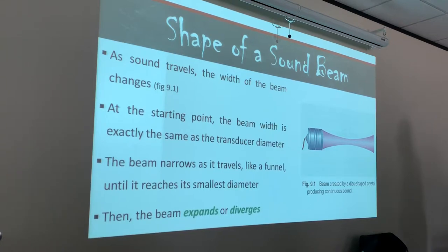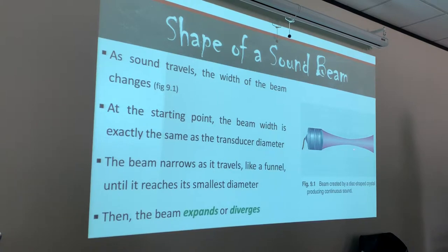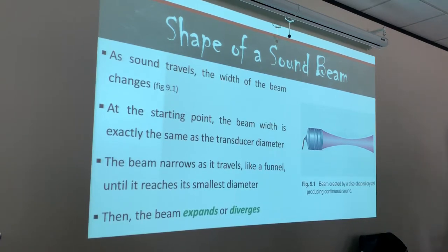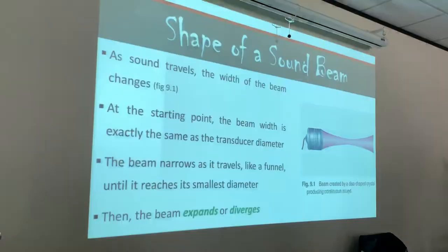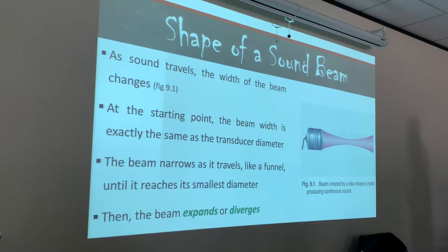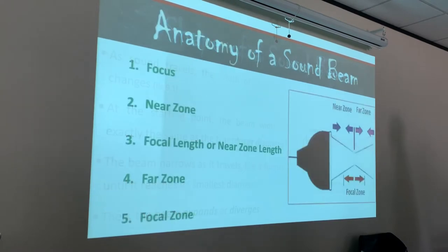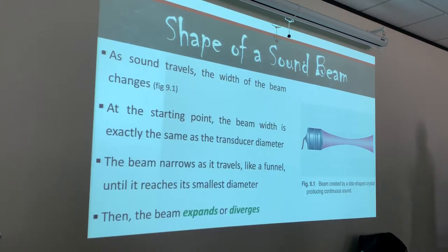Wherever the anatomy is, I always want the focus to be at the posterior border of that anatomy. Then the beam expands or diverges — it means it's getting bigger. It goes from converging to the focus, then it diverges and gets bigger. Any questions on the shape of the beam? Hourglass shape, guys. If anybody asks you what's the shape of the ultrasound beam — hourglass shape. What makes that curve? We're going to talk about that when we talk about Huygens' principle — it happens because of destructive and constructive interference.